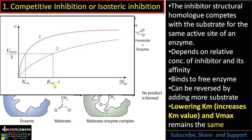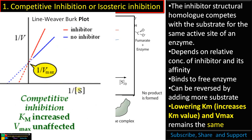Km increases in competitive inhibition, indicating the affinity of the enzyme for the substrate decreases. In the Lineweaver-Burk plot, the x-axis is the reciprocal of substrate concentration (1/S) and the y-axis is the reciprocal of velocity (1/V). The red line is with inhibitor and the blue line is without inhibitor. The Km has shifted, indicating increased Km, while the Vmax intercept remains the same and the slope gets steeper with the inhibitor. So in competitive inhibition, Km increases but Vmax remains unchanged.